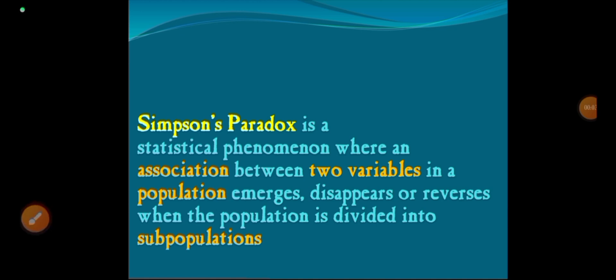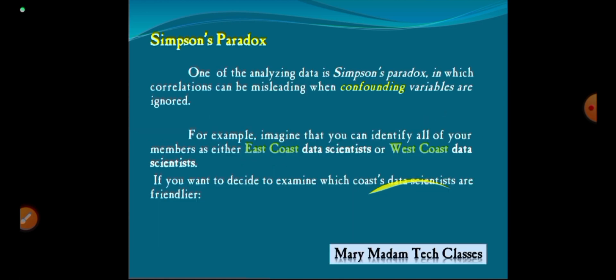Simpson's Paradox is a statistical phenomenon where an association between two variables in a population emerges, disappears, or reverses when the population is divided into subpopulations. According to data science, Simpson's Paradox is one way of analyzing data.